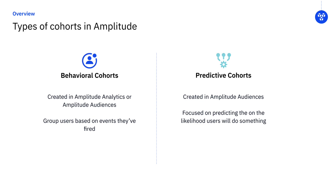There are two types of cohorts used in Amplitude: behavioral cohorts and predictive cohorts. Predictive cohorts are created in Amplitude's Audiences product and focus on predicting the likelihood users will do something, such as fire a specific event or have a specific user property.